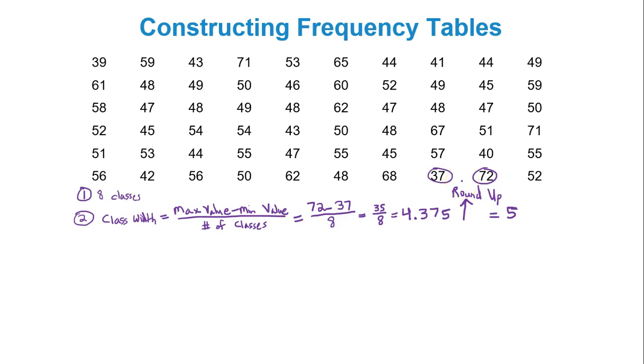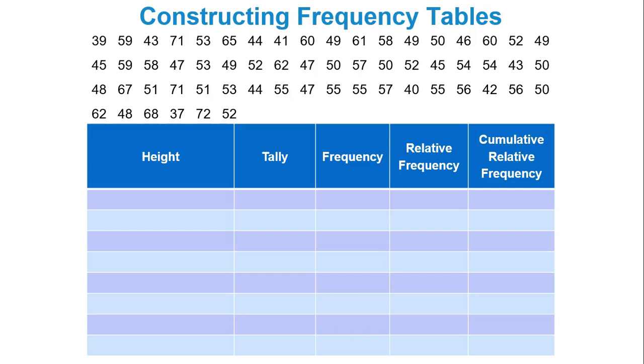So we have enough information to now construct our classes in our table. We said the minimum data value was 37 and the maximum value was 72. We said my class width would be 5. So in this case 37 is my lowest value. Pick a nice number that's just below that. I would go with 35.